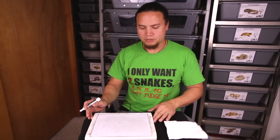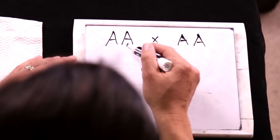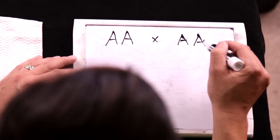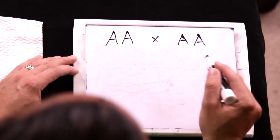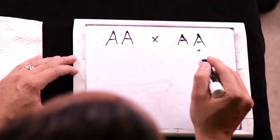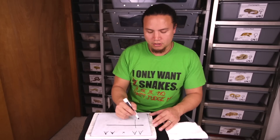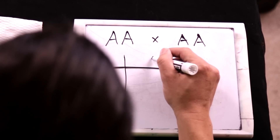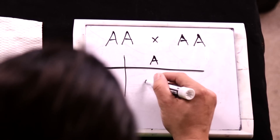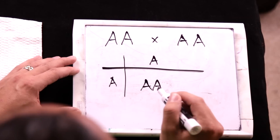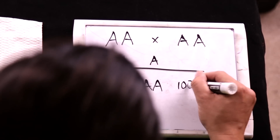Now let's do something with a recessive trait such as albino. Since it's a recessive trait, for the animal to have the phenotype of an albino it must be homozygous for albino, having the albino allele on both chromosomes. So in this case both parents are going to be visual albinos, and the Punnett square will be the same simple one, because dad can only pass on albino, mom can only pass on albino, and therefore all the babies will be homozygous for albino — 100% visual albinos.